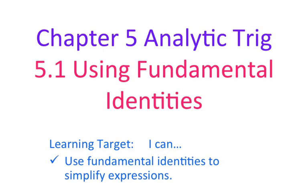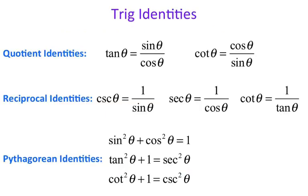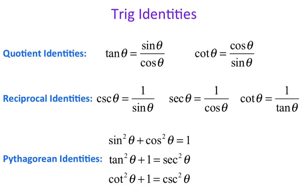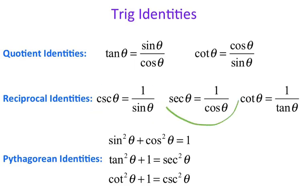The next slide shows you the fundamental identities. We have the quotient identities that state that tangent of theta equals sine of theta over cosine of theta, and cotangent is cosine over sine. The reciprocal functions say that cosecant is 1 over sine, secant is 1 over cosine, and cotangent is 1 over tangent.